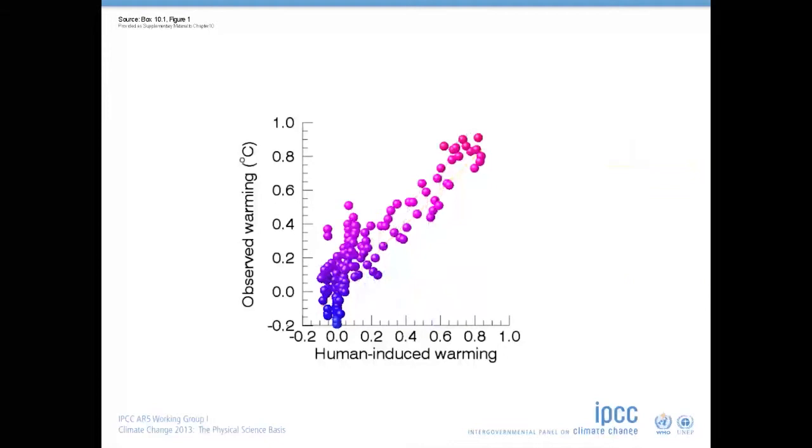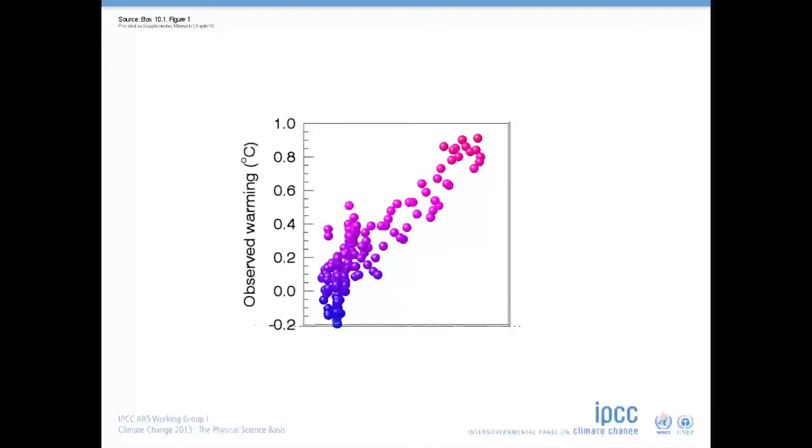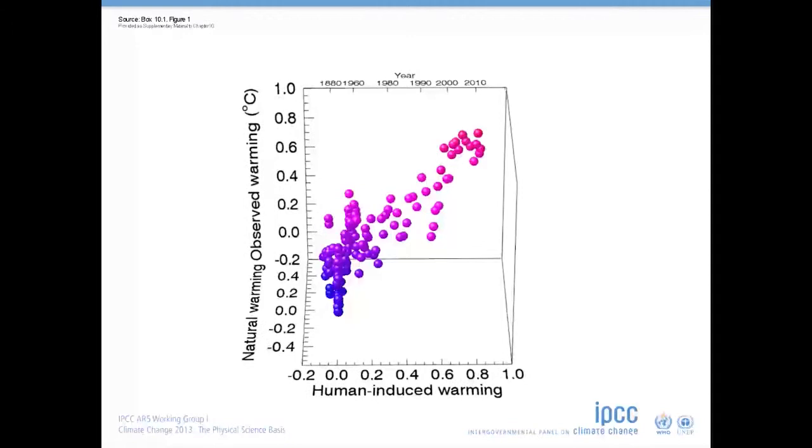To allow you to compare observed temperature changes with model responses to human influences and natural factors at the same time, we need to make this plot three-dimensional, like this. The height of the dots tell us how much warming was observed in each year.